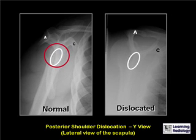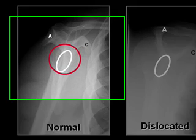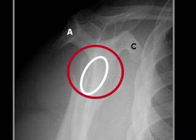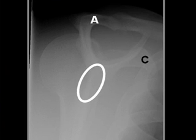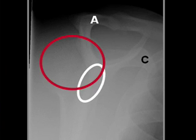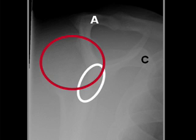This is what the Y view — the lateral view of the scapula — looks like in an individual with a posterior shoulder dislocation. First, the normal view shows the humeral head, marked by the red circle, centered on the glenoid. In the individual with a posterior dislocation, the humeral head lies outside of the glenoid, underneath the acromion process — not the coracoid, as in an anterior dislocation.